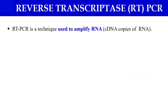Reverse transcriptase PCR, sometimes also called RT-PCR, uses the enzyme reverse transcriptase. What is reverse transcriptase PCR? As you know, we can amplify DNA — but what about RNA? If you want to amplify RNA by PCR, the answer is yes, we can. By using this reverse transcriptase PCR technique, we can amplify RNA in the same PCR machine.